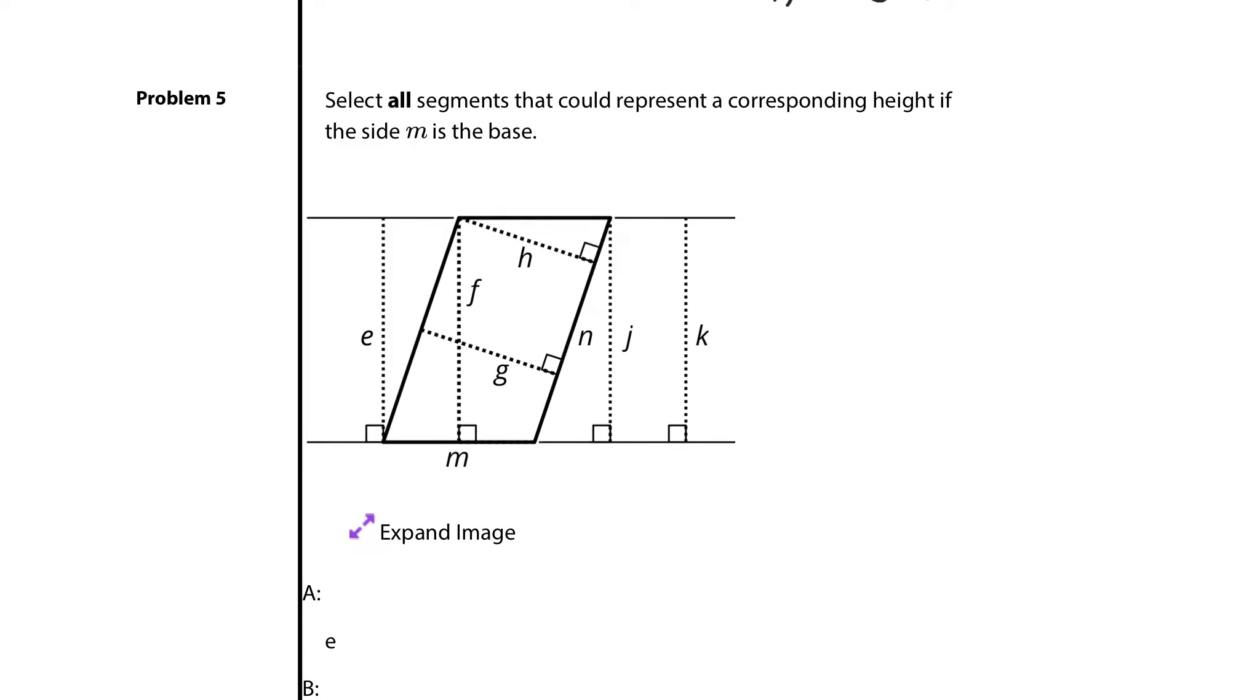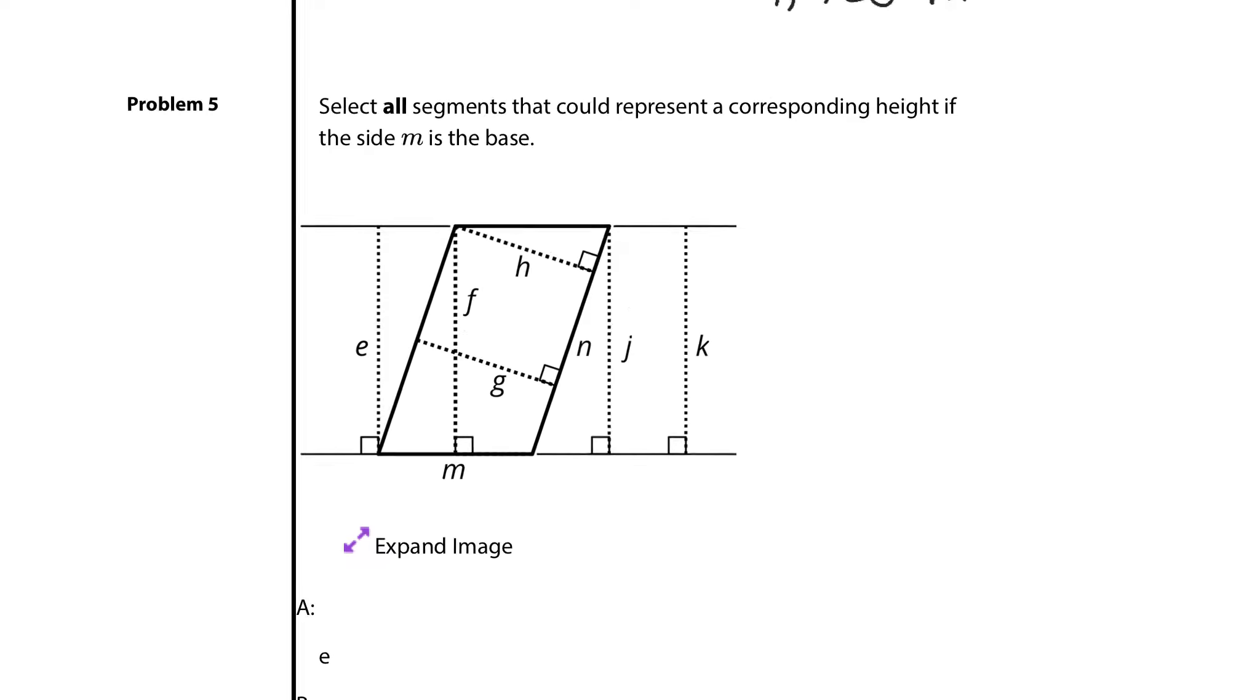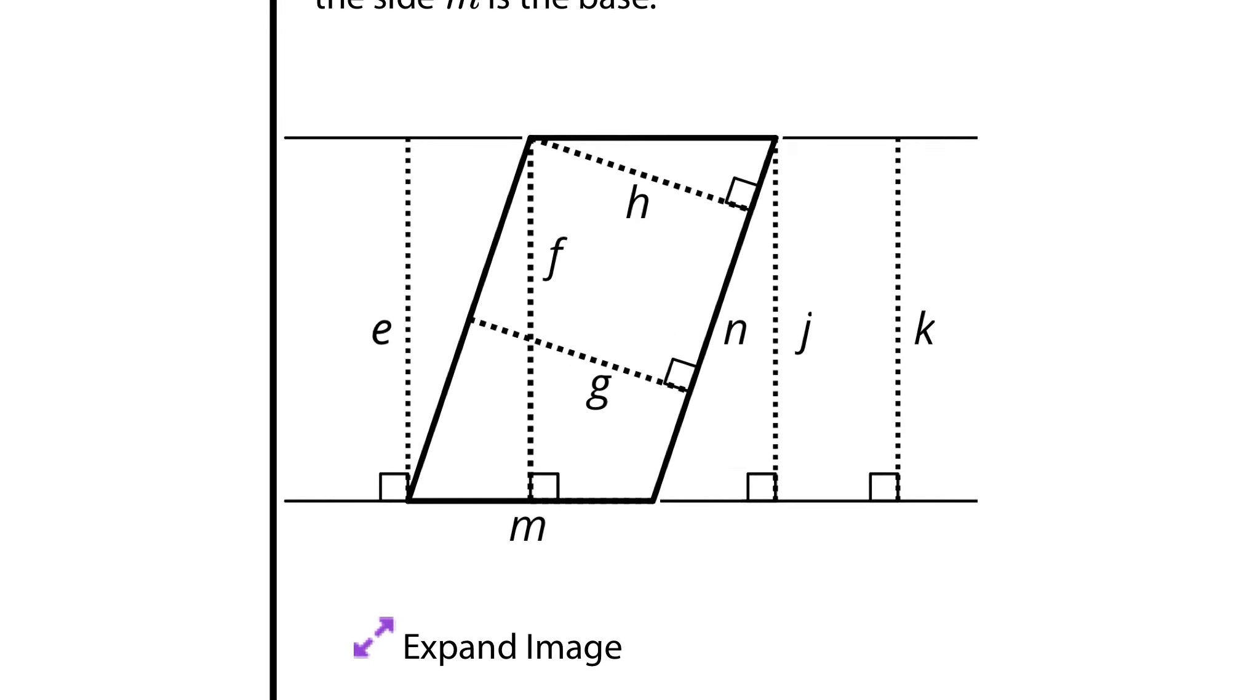Question 5. Select all segments that could represent the corresponding height if side M is the base. Alright, let's highlight M here. And actually, I'm going to kind of do a dash line coming all the way out from it. And here's why. Any line that meets at a right angle with base M and goes up to the other one, the other base that is, can be a corresponding height. And so I'm going to lock in on these right angles here. And that will guide me towards the solution. Well, which lines connect those two bases, with this being the other base, at that right angle. At that right angle, I see an E, an F, I'm going to be careful here, a J, and a K.